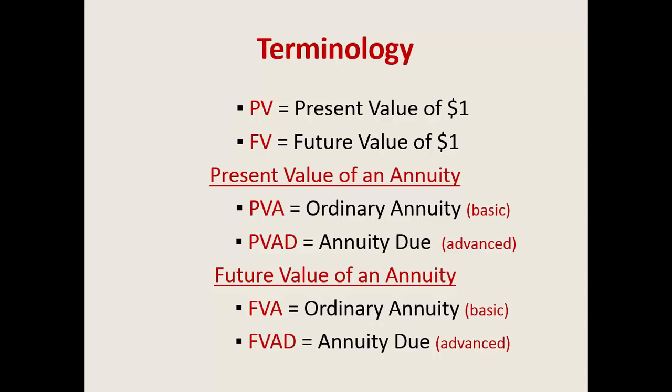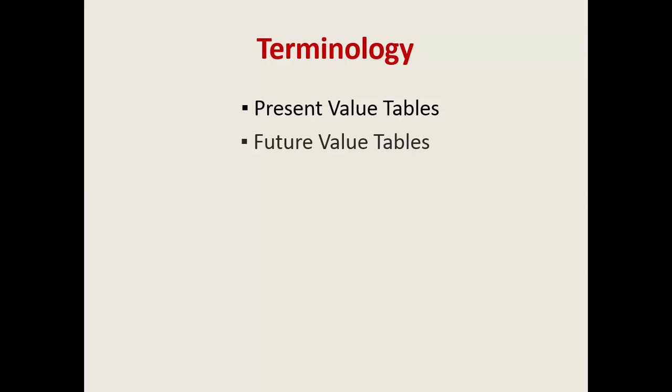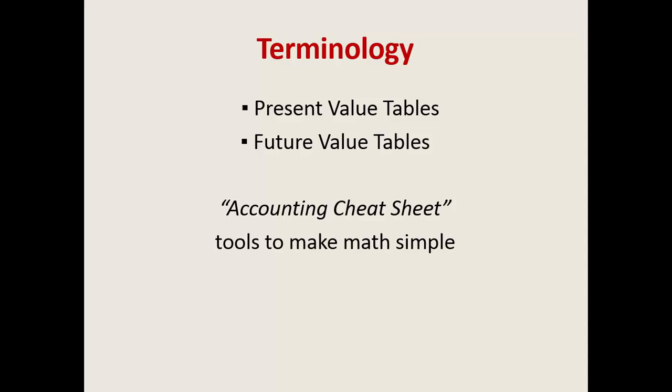Different tables depend on where you are in your studies. In a fundamental accounting course — accounting principles — you're introduced to the basic ordinary annuities, so you will use four tables. In an upper level accounting course, intermediate or advanced accounting, or even business finance, there are a couple more tables, called an annuity due. Think of these tables as the accounting cheat sheets. Math majors have to memorize the algebraic equations to calculate present and future value, but accountants are smarter than that — we know how to create and use tools. Think of the tables as tools to make your math simple.